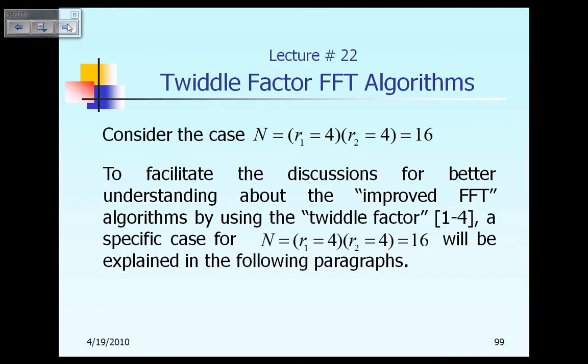Okay, in this lecture number 22, we will talk about Twiddle Factor Fast Fourier Transform algorithms. In order to understand the detail of this chapter, let us consider again where the number of sample data point capital N can be expressed as the product of two integers, R1 times R2. Assuming R1 equal to 4 and assuming R2 equal to 4, so capital N is equal to 16.